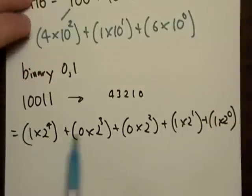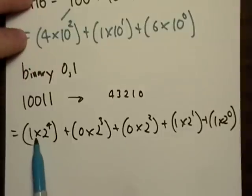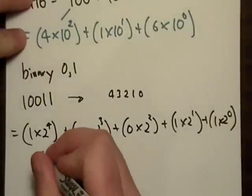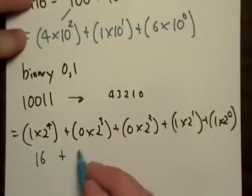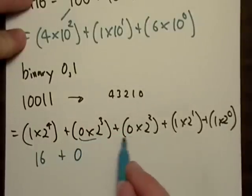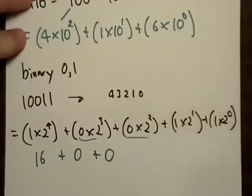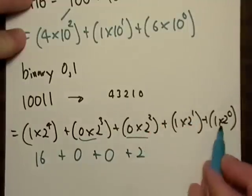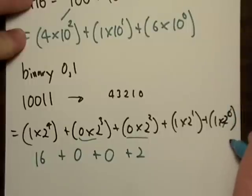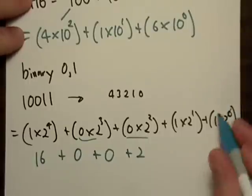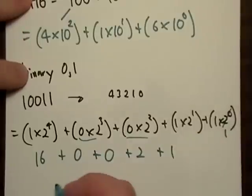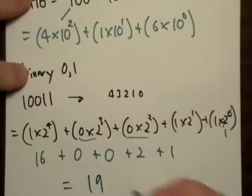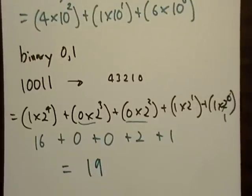So we're ready to convert this. One times 2 to the fourth is just 16. The zero terms are just zero — anything times zero is zero. Then 1 times 2 to the first power is 2. And 2 to the zero — anything to the zero power is just 1, so that stays 1. And it looks like that binary number is 19.